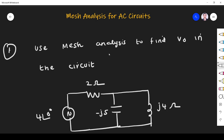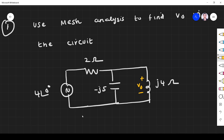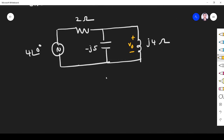The first question is: use mesh analysis to find V0 in the circuit. The V0 value is given here, and we have to find V0. The procedure is the same as for DC circuits — the mesh analysis procedure used for DC circuits can be followed, except the device values will be changed as per the problem.